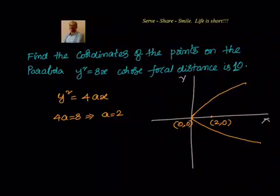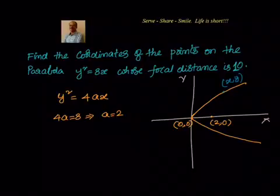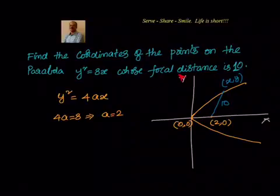Now we have to find the coordinates of the points on the parabola whose focal distance equals 10. Focal distance is the distance from the point to the focus. Let's say there is a point (x, y) on the parabola, and its distance to the focus is 10. We can directly apply the distance between two points formula.